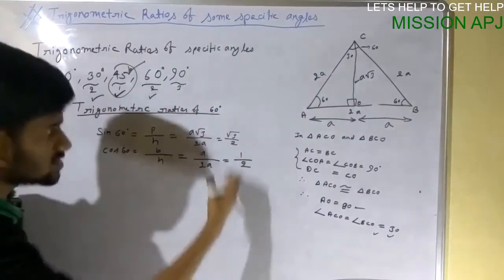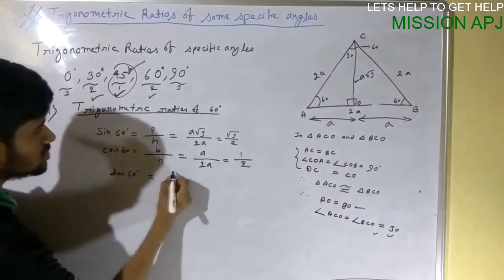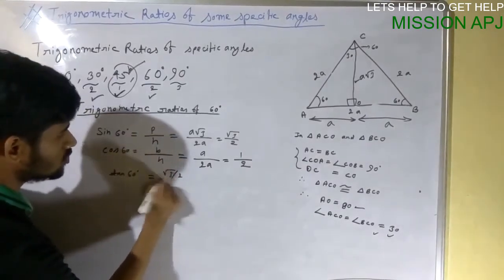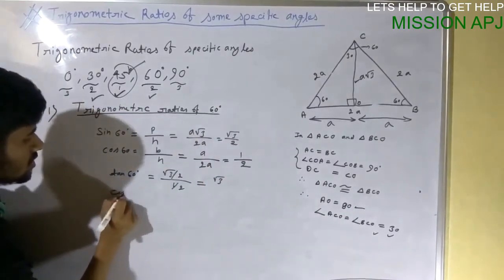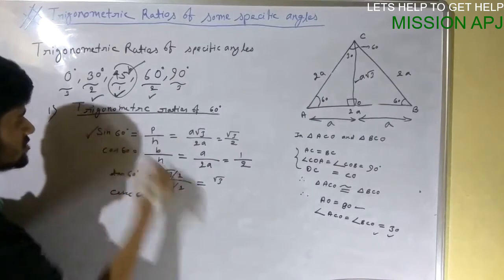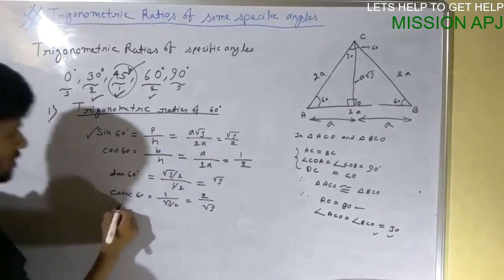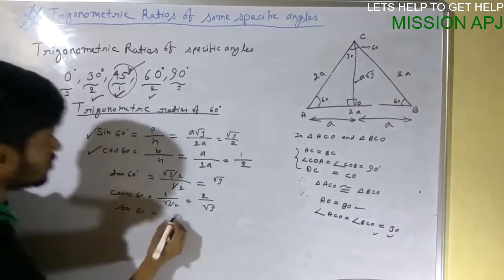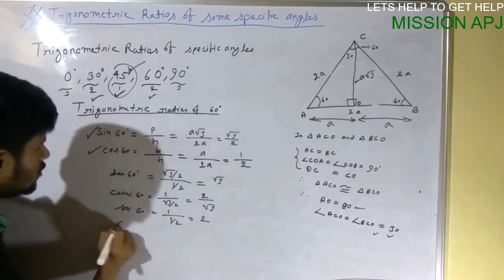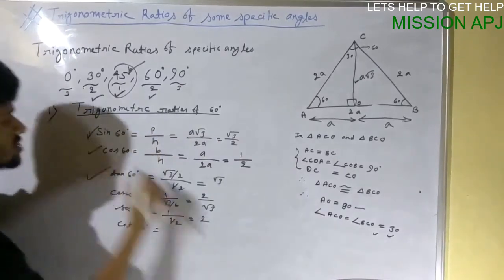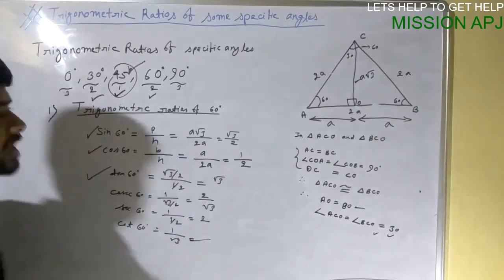Using sine and cosine we find the rest. Tan 60° = sin 60° / cos 60° = (√3/2) / (1/2) = √3. Cosec 60° = 1/sin 60° = 2/√3. Sec 60° = 1/cos 60° = 1/(1/2) = 2. Cot 60° = 1/tan 60° = 1/√3.